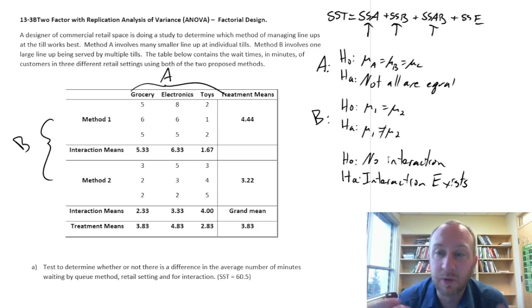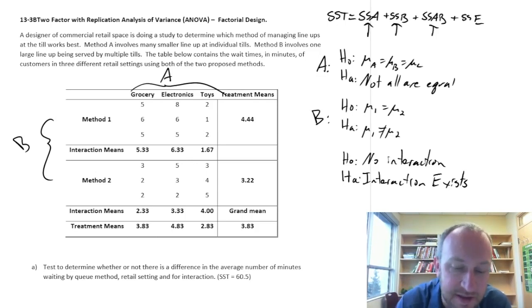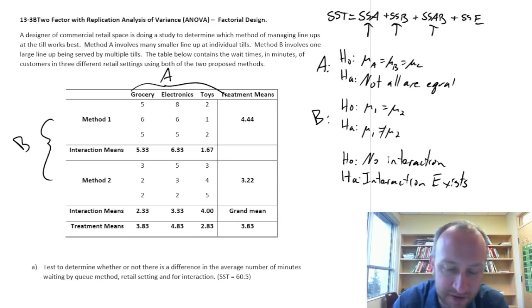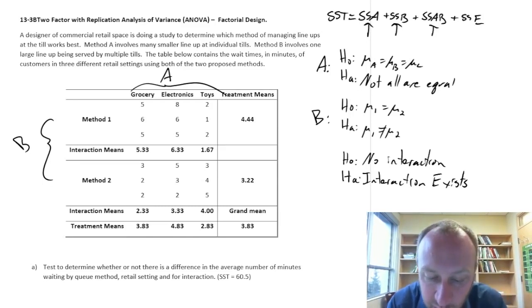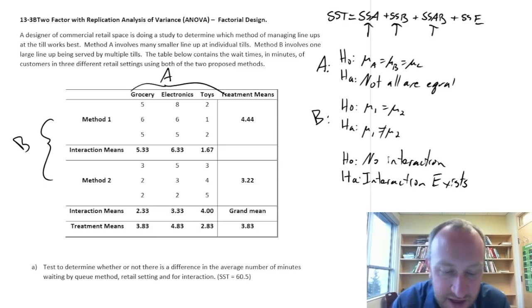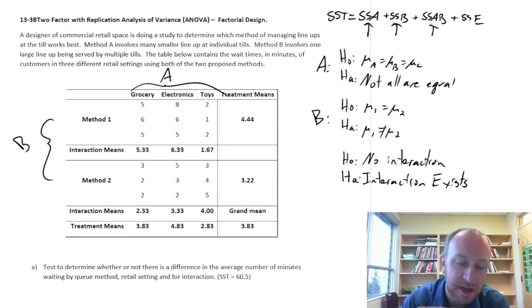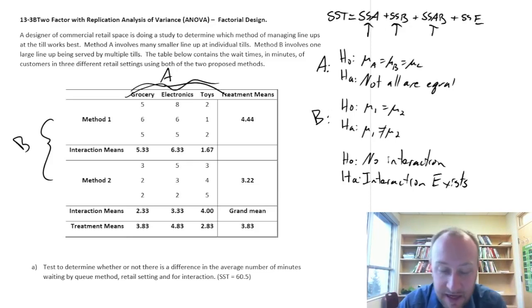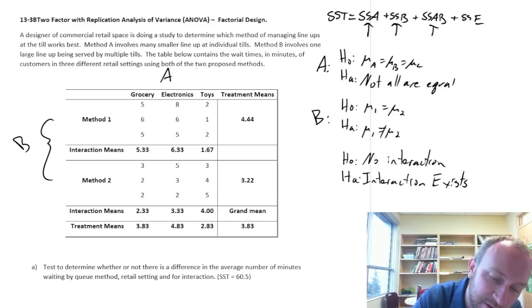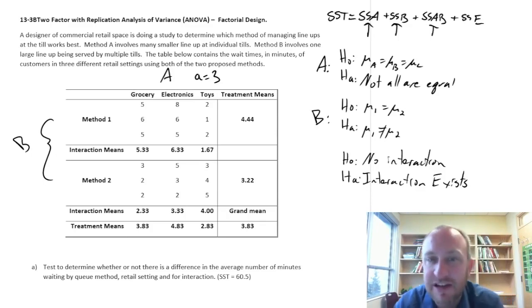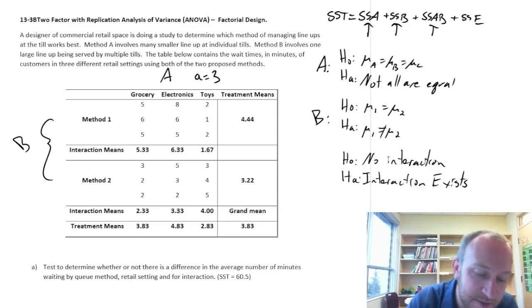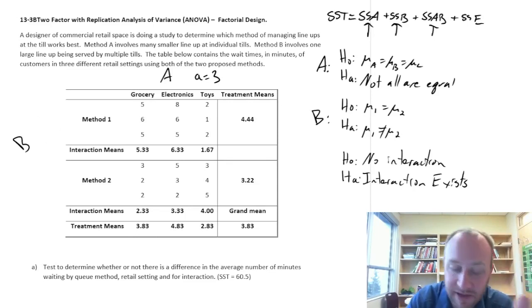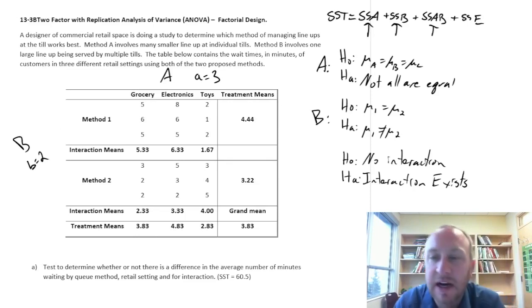Let's get into the exercise. A designer of commercial retail space is doing a study to determine which method of managing lineups at the till works best. Method A involves many small lineups at individual tills. Method B involves one large lineup served by multiple tills. The table provides wait times in minutes for customers in three different retail settings using both proposed methods. Factor A is the different types of retail settings with three treatments, and Factor B is the different methods of lineup with two treatments.